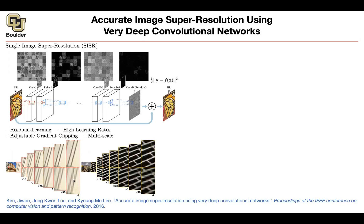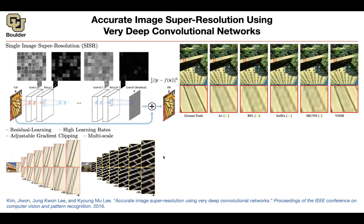That's the ground truth, that's the resolution one, and that's what the network is predicting. This is the low resolution image, this is what the network is giving you, and it's only one network for all of these scales. So that's impressive.